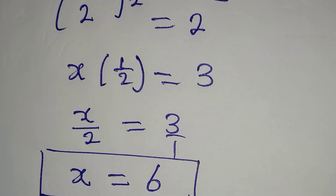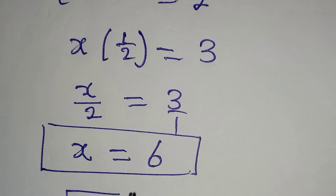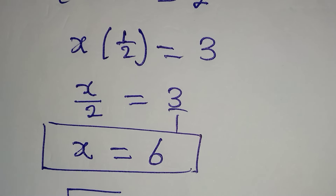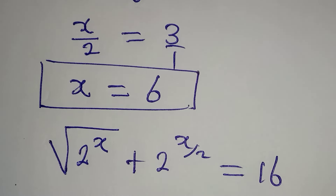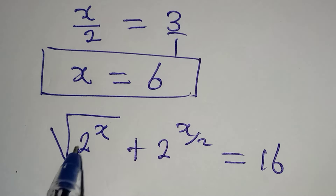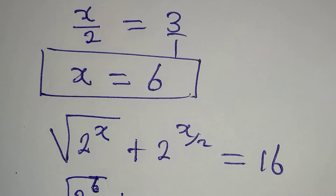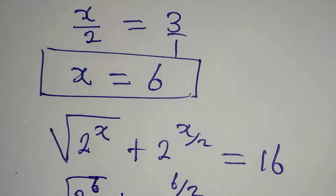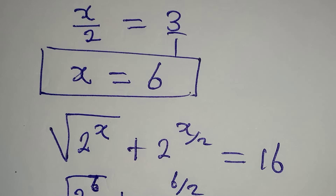Now the bases are the same, so we can equate the powers. The powers are x multiplied by 1 over 2 equal to 3. This means that x over 2 is equal to 3. And then, this is over 1, so I can cross multiply. x times 1 is x, and that will be equal to 2 times 3, which is 6.